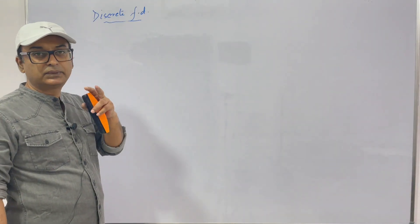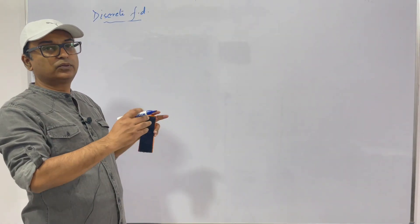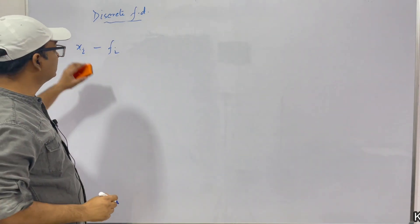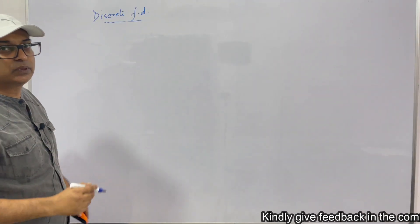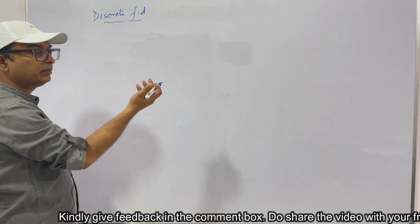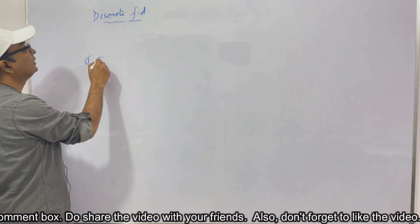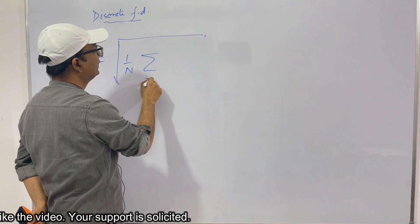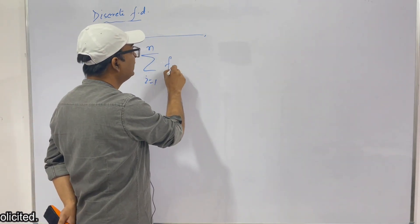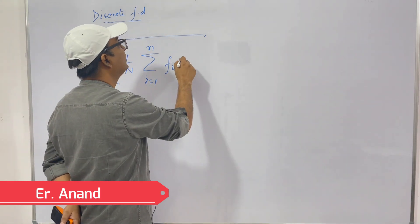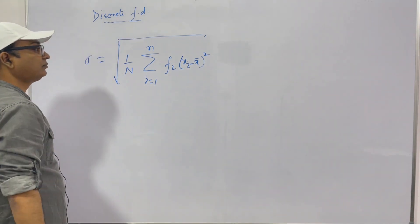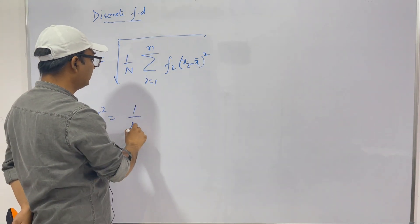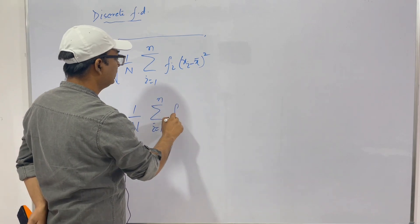We saw standard deviation and variance for a set of observations. Now what if we have a discrete frequency distribution, where for every value xi we have a frequency associated with it? The result is similar to mean deviation: σ = √(1/n · Σ fi(xi − x̄)²), and variance = (1/n) · Σ fi(xi − x̄)².